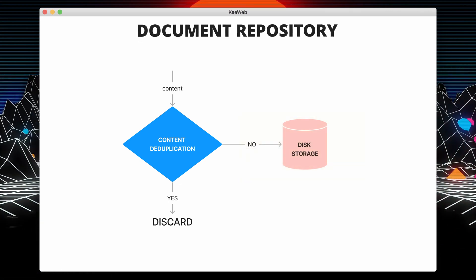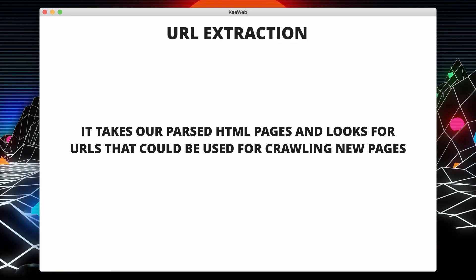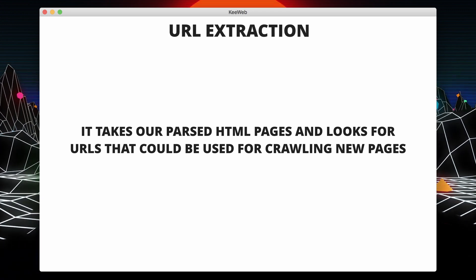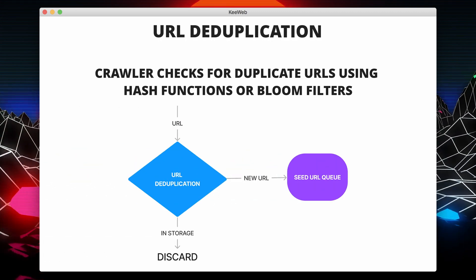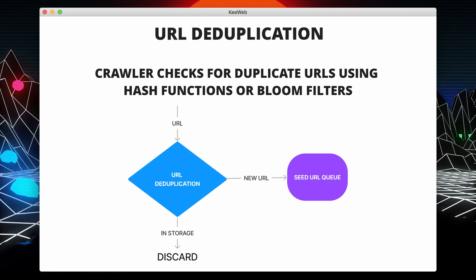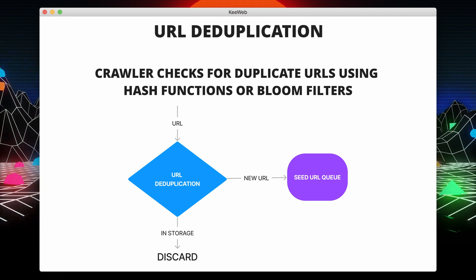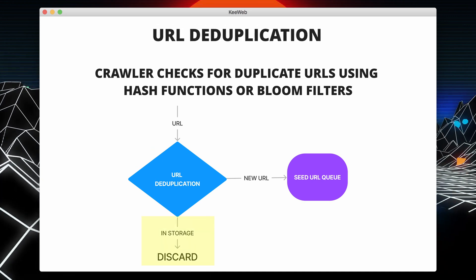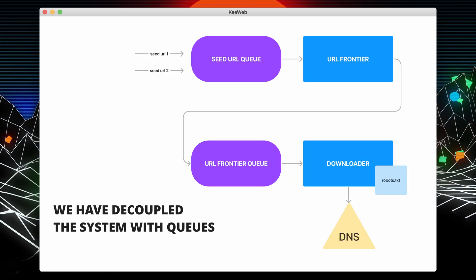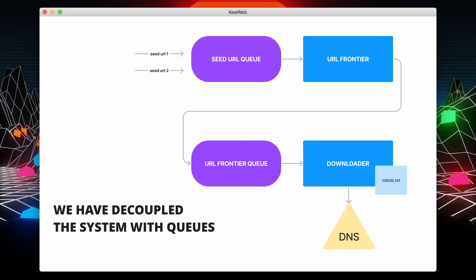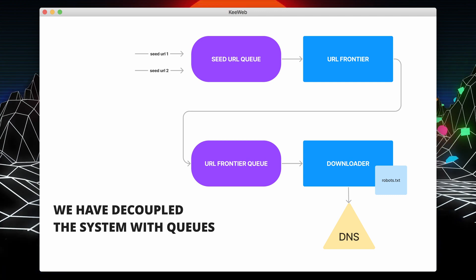The next step is URL extraction. In this component, we take our parsed HTML pages and look for URLs that could be used for crawling new pages. Then we have URL deduplication — to avoid redundancy, the crawler checks for duplicate URLs using hash functions or bloom filters. If the URL is already in storage, we move on; otherwise, we add it to the queues feeding into the URL frontier. We can really decouple this system by putting queues in between services.